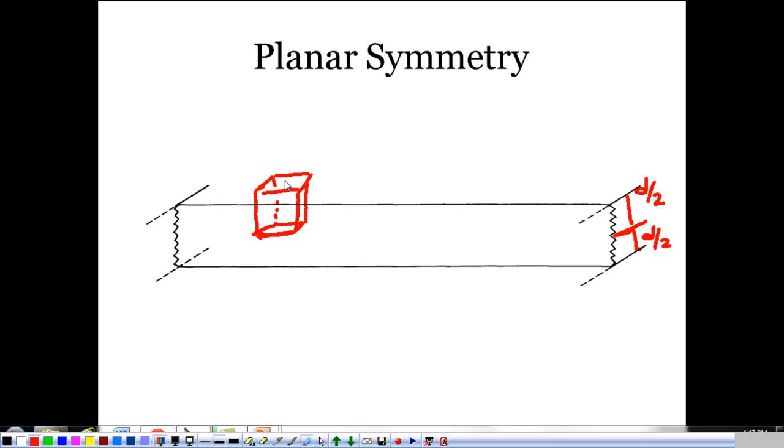We have an area A here. Our Q enclosed is that area right here enclosed inside of the slab. It doesn't have anything to do with anything that's above it. So as long as we're on the outside, Q enclosed is going to be rho times my volume enclosed, which is going to be rho times the area of the top A times the width of the part that's inside of the slab, D over 2.